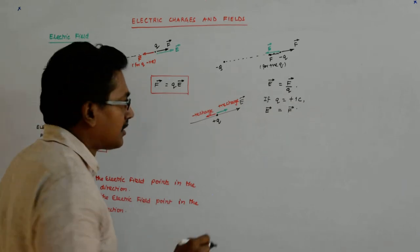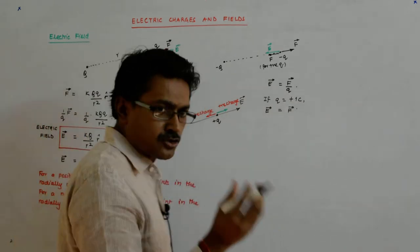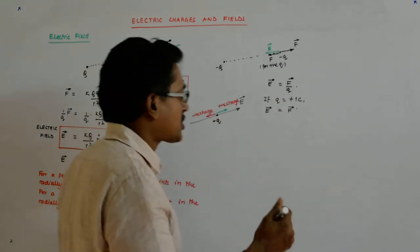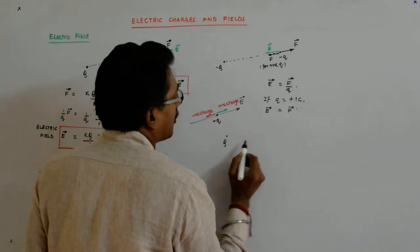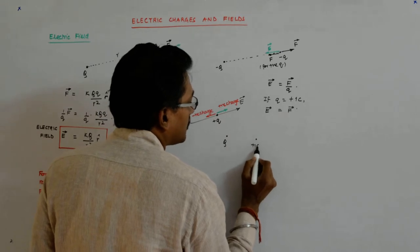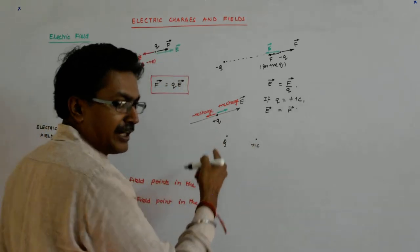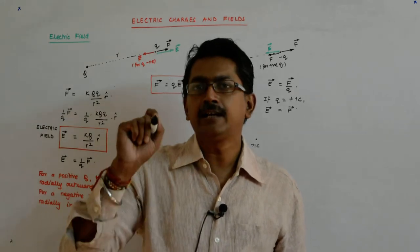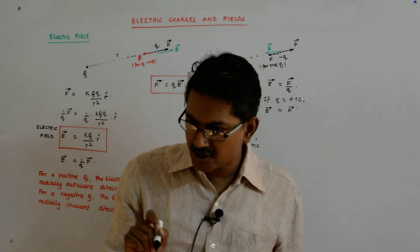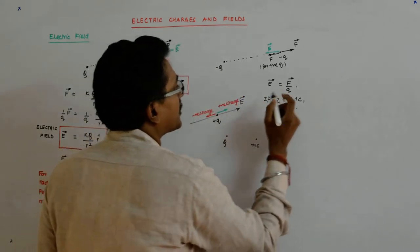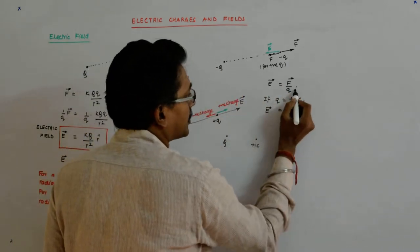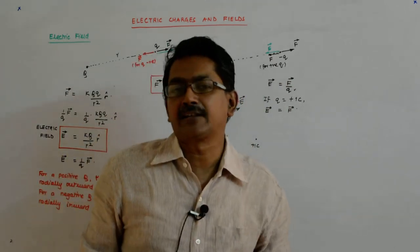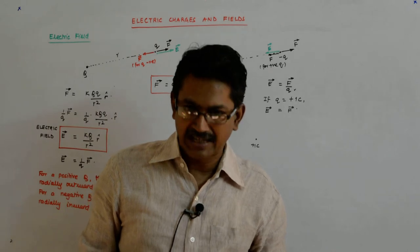But there is a trouble. A charge of one coulomb is a huge amount of charge. Now that charge, when placed in the vicinity of Q, will distort the electric field of Q itself. So we need to put in a small charge, find out the force, and then divide that force by that Q to get the electric field.